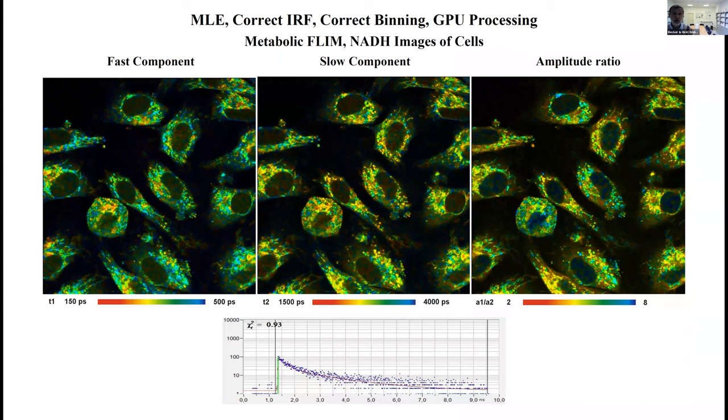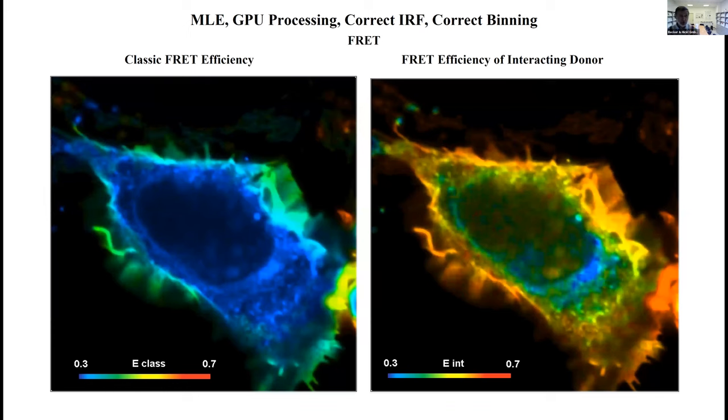This is lifetime of the fast component, this is lifetime of the slow component, this is the amplitude ratio of the two components. This is metabolic FLIM of live cells: fast component, slow component, amplitude ratio. In these things we saw for the first time that different mitochondria in cells may be totally different in the component lifetimes and also in the amplitude ratio. Obviously the metabolism is not exactly the same in different mitochondria.